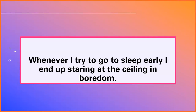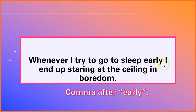'Whenever I try to go to sleep early' is my dependent clause. If I walk up to you and say, 'Whenever I try to go to sleep early,' and then stop talking, you're either gonna stare at me for a few seconds or say, 'What are you talking about?' So 'whenever I try to go to sleep early' is dependent. My independent clause is 'I end up staring at the ceiling in boredom.' Because my dependent clause is at the beginning of the sentence, I need a comma at the end of the dependent clause — which means I need a comma after 'early.'